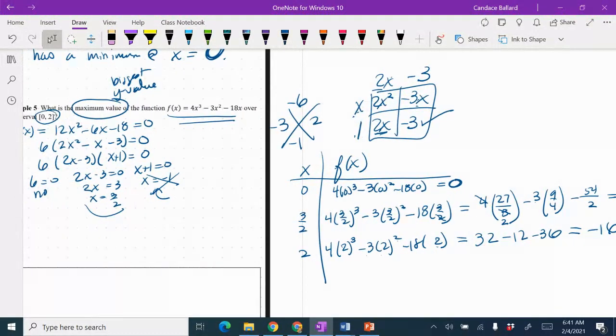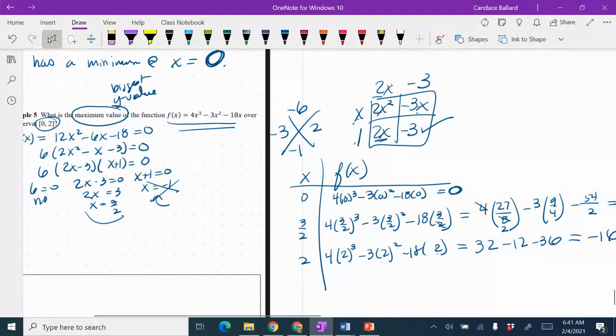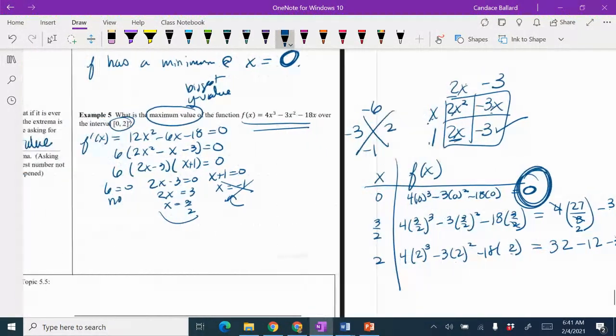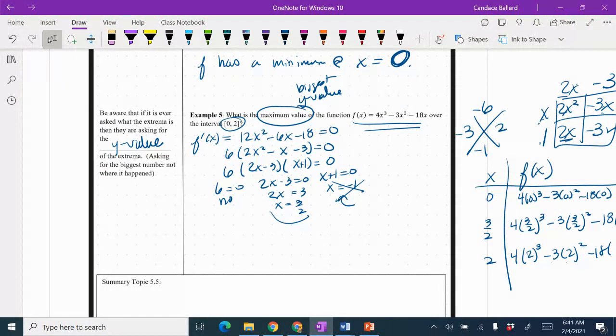We are looking for the maximum value, so I need the biggest number. And check this out. This one, it was a negative. This one was a negative. So my maximum value is actually zero. It's a coincidence we've gotten zero on the last two answers. That doesn't normally happen. So f of x has a max value of zero.